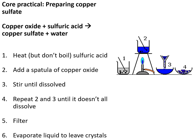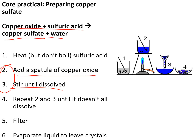The core practical to prepare copper sulfate involved reacting copper oxide and sulfuric acid to make copper sulfate and water. We heated some acid without boiling it, then added a spatula of copper oxide and stirred until it dissolved to make a blue solution. We repeated this until the acid stopped dissolving and it went black and cloudy. Then we filtered it to remove the undissolved copper oxide to get a nice blue solution, poured it into an evaporating basin, heated it over a beaker of hot water, and when the solution reduced by about half, left it in a warm place to form crystals over a few days.